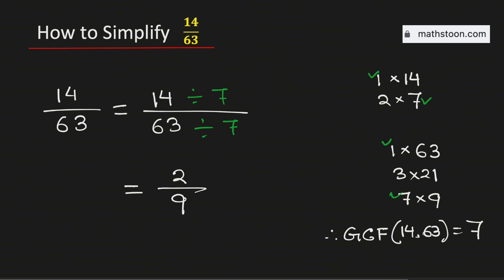Therefore, the fraction 14 over 63 simplified is equal to 2 over 9, and it is in its lowest terms. This is our final answer. Thank you for watching.